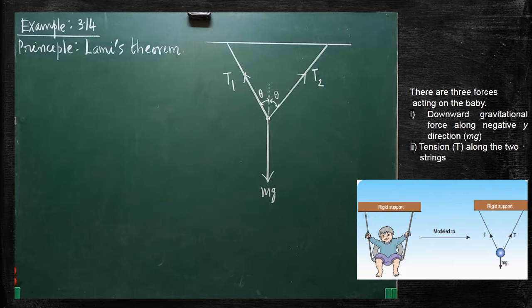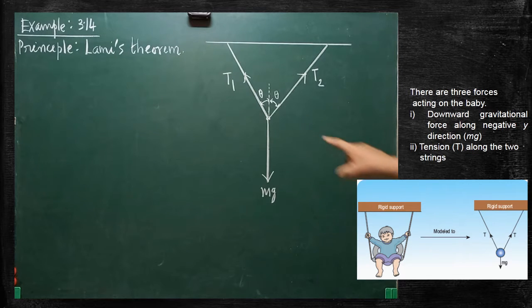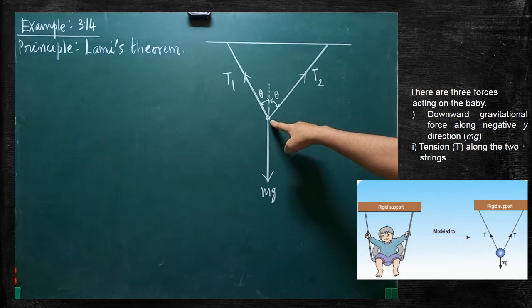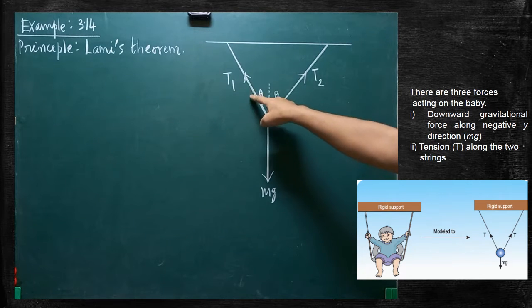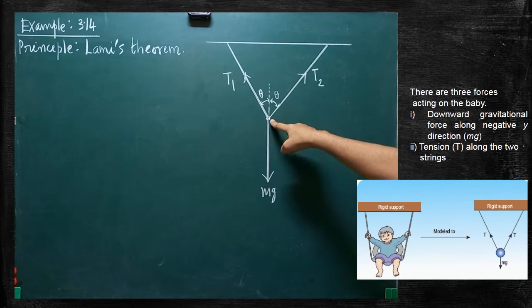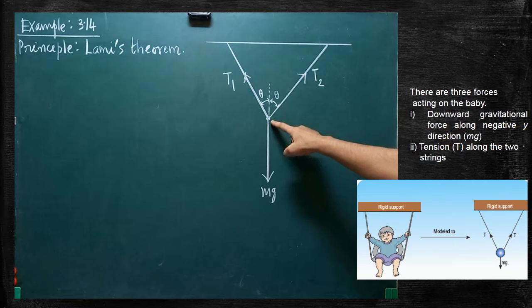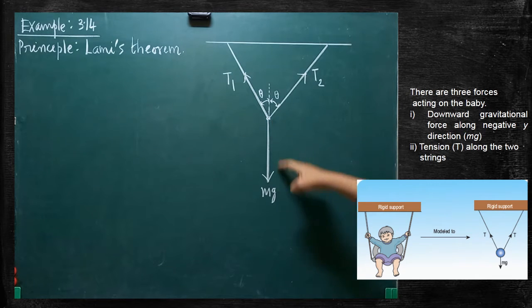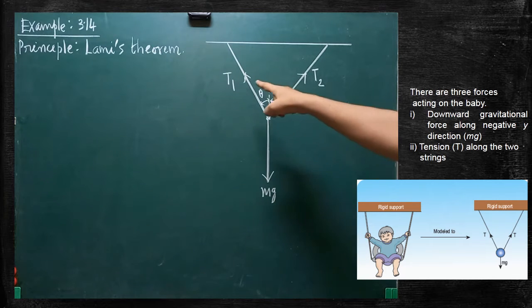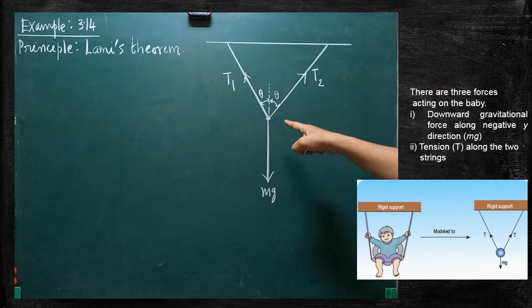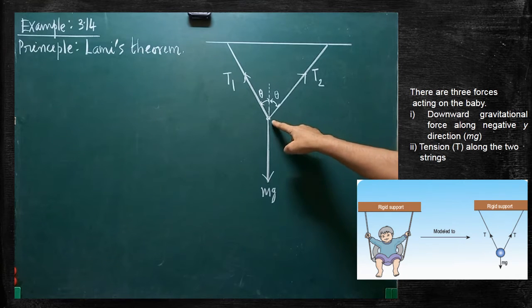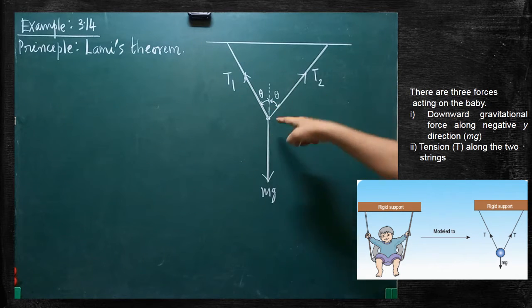Here, the diagram is given in the textbook. I have shown the photo of the diagram. This is the location point of the child. With the help of the support of these two chains, that swing is hanged. Tension T1 is acting in this string, tension T2 is acting in this string, and the gravitational force Mg is acting towards the downward direction. Three forces are acting, and they are concurrent in nature — the lines of action of all three forces are meeting at this point.